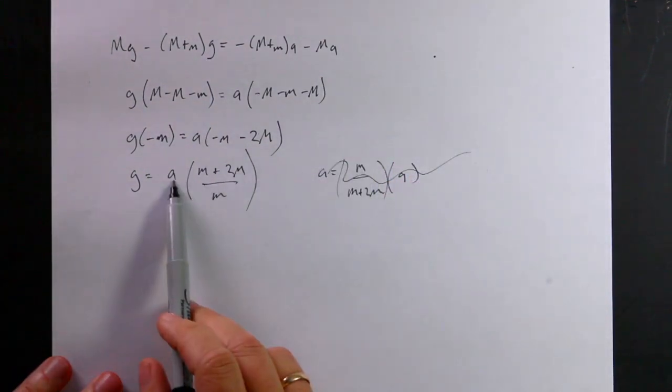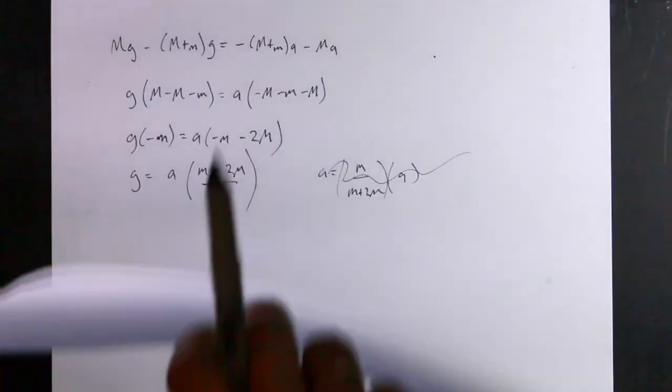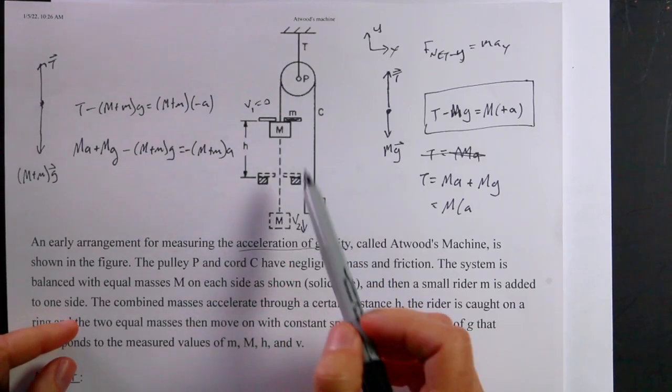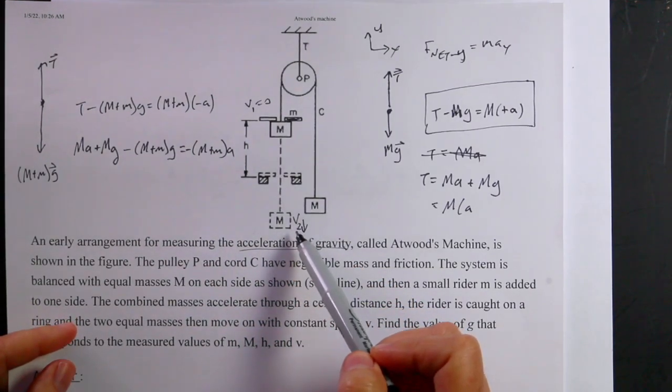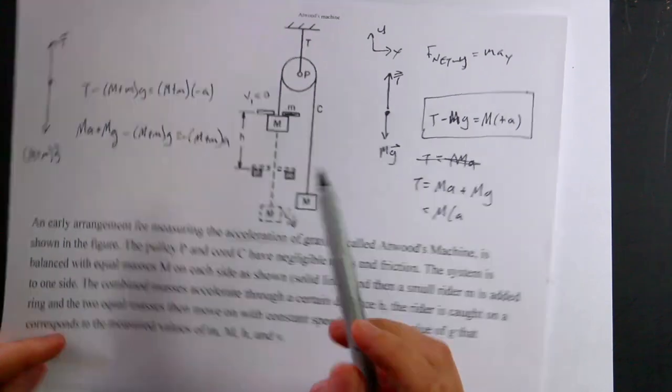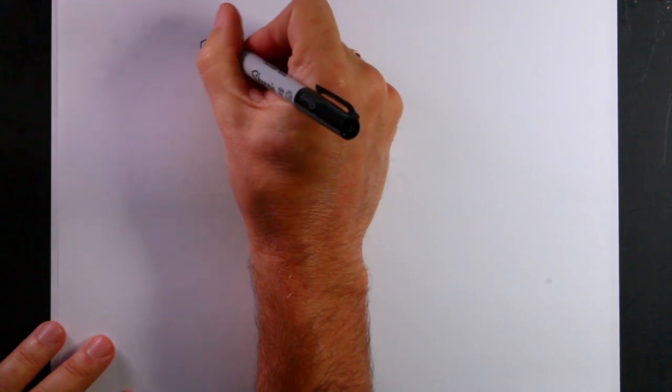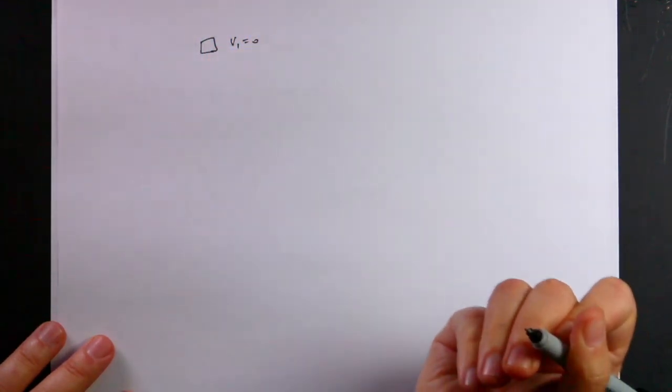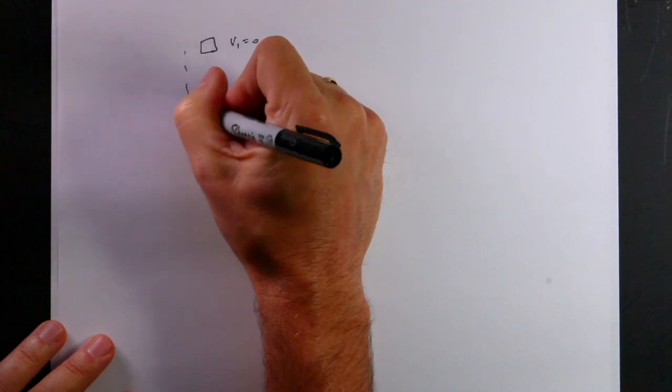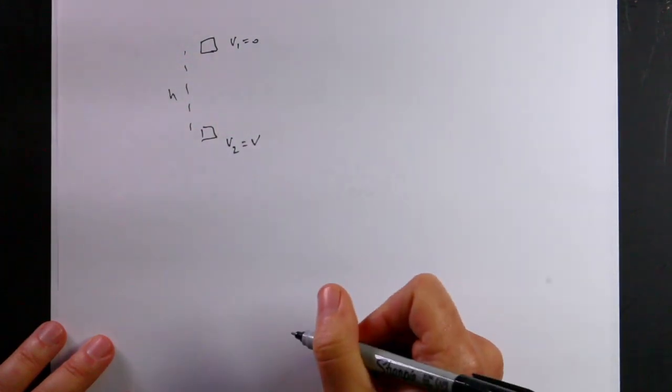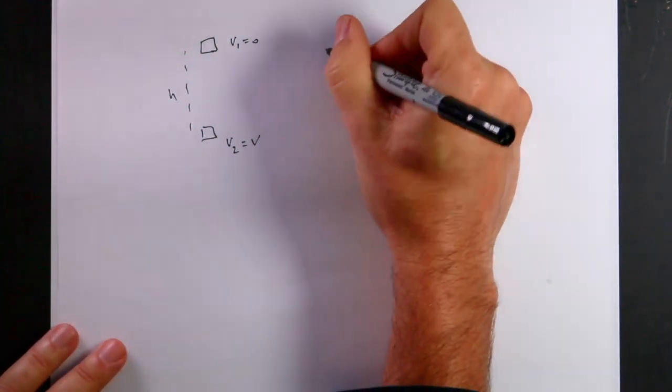So now I need an expression for A. Let's go back over here. So I know that it starts at V, the Y velocity of zero ends with the Y velocity of just V, and it goes through a distance H. So let's look at the definition. I'm going to start a new piece of paper. Okay, so here I have the mass here. V1 equals zero. This is in the Y direction, so I'm going to use scalar values. It goes down a distance H, and then here it has a V2 equals V.